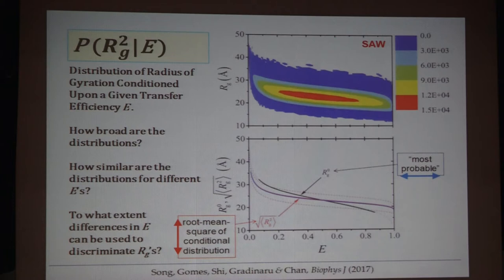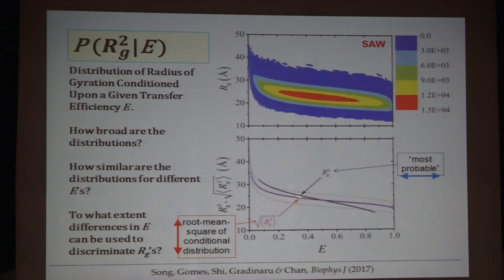We can look at at least two different quantities. One is if we assume the ensemble has a very narrow range of R_G, we can do an average and get an average E — we call this the most probable radius of gyration. The other is if we have a sharp value of E, we can get a distribution and then a root-mean-square value of R_G. The dotted curve is just one standard deviation of this distribution of R_G.